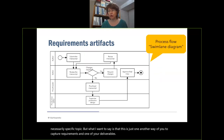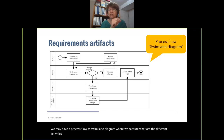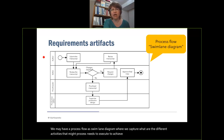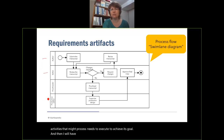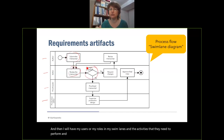We may have a process flow — a swim lane diagram — where we capture what are the different activities my process needs to execute to achieve its goal. I have my users or roles in my swim lanes, the activities they need to perform, the conditions under which different activities will be performed, and all of that takes me to my final goal.